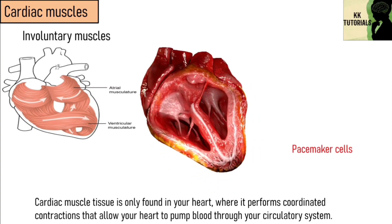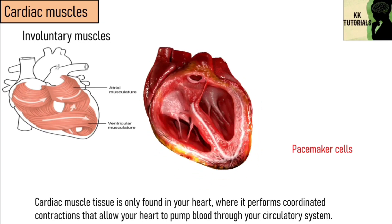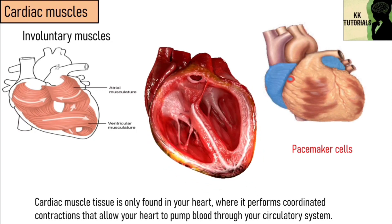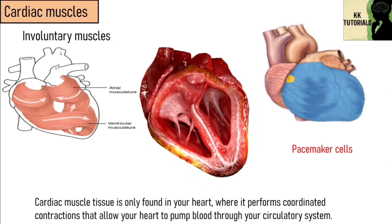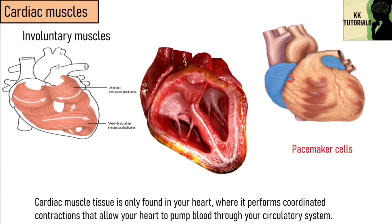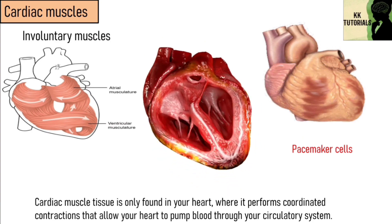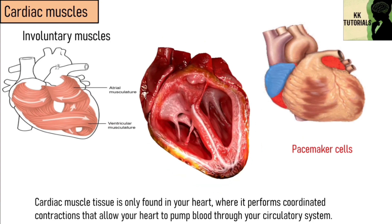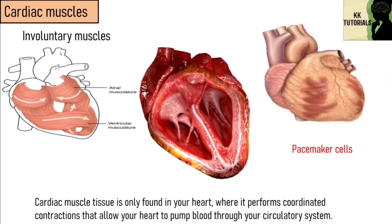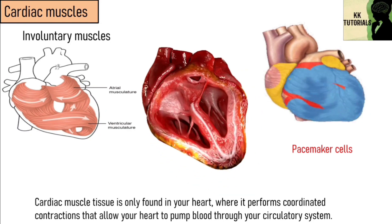It does this through specialized cells called pacemaker cells, which control the contractions of your heart. Your nervous system sends signals to pacemaker cells that prompt them to either speed up or slow down your heart rate. Your pacemaker cells are connected to other cardiac muscle cells, allowing them to pass along signals, resulting in a wave of contractions that creates your heartbeat.